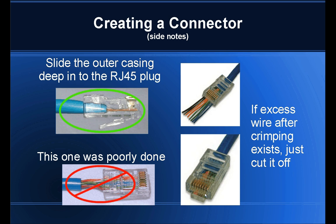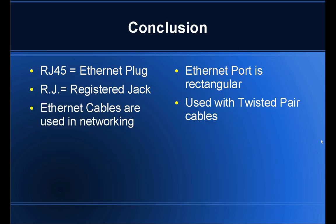In conclusion, RJ45 is an ethernet plug. RJ stands for registered jack. Ethernet cables are used in networking. The ethernet port is rectangular, not square. And the RJ45 is generally used with twisted pair cables. Here are my sources. Thank you very much.